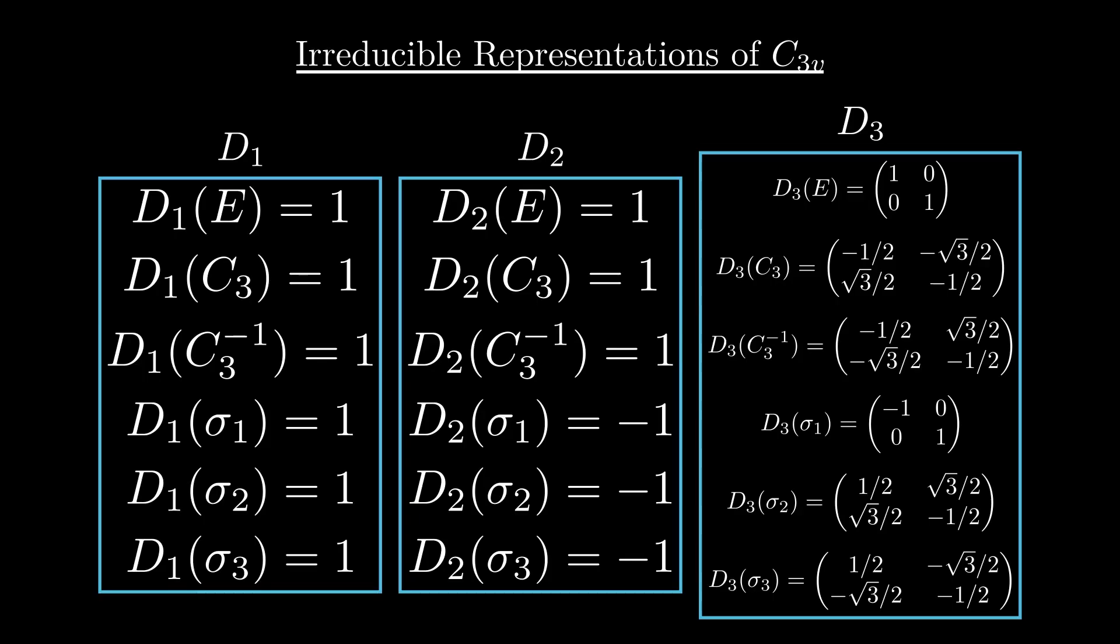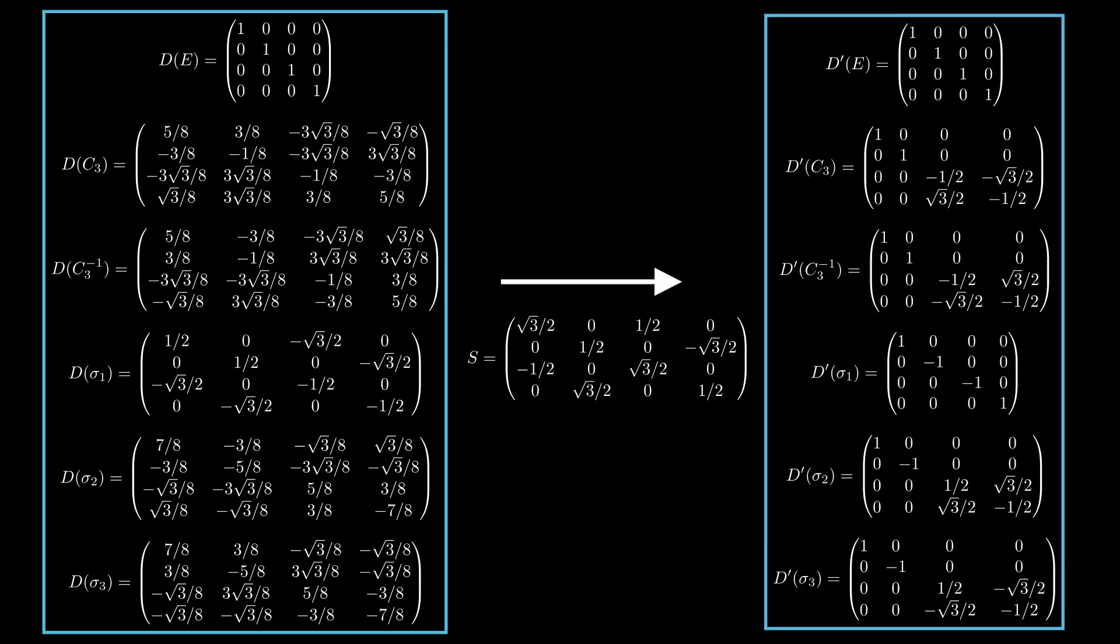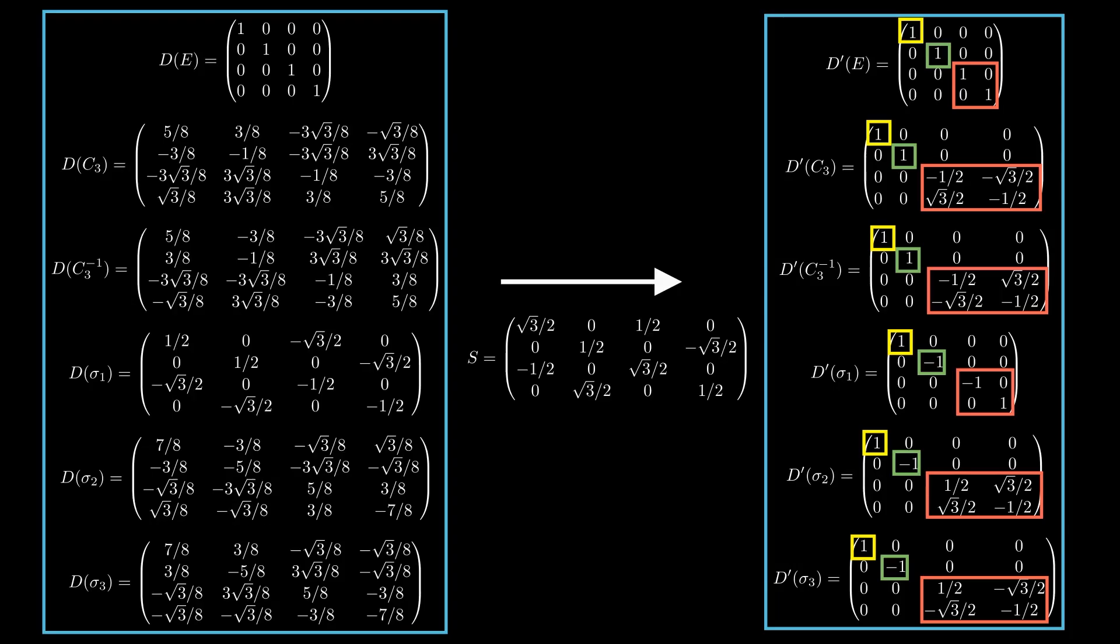These irreducible representations act as the atoms or the prime numbers of the theory. The fact is that any representation can be decomposed in irreducible representations, in the same manner that any number can be decomposed in prime factors. Starting from any representation, such as this frightening representation, with a well-chosen change of basis, the representation will be equivalent to a block diagonal representation, where each block corresponds to one irreducible representation. In this example, we have D1, D2, and D3. The technical part here is to find the change of basis. It requires some mathematical tools that I will not present in this video.